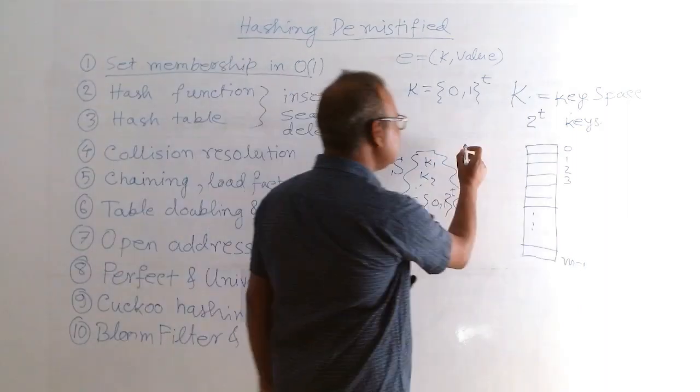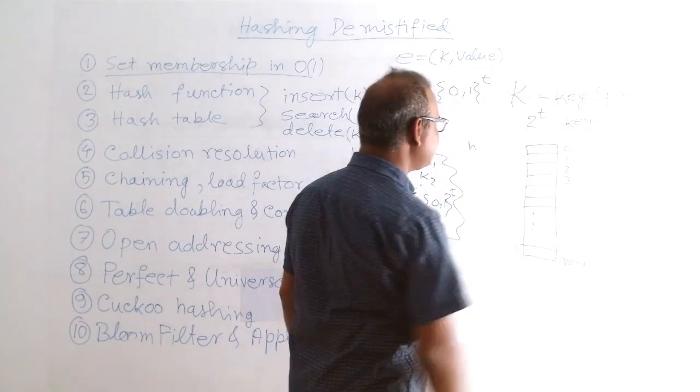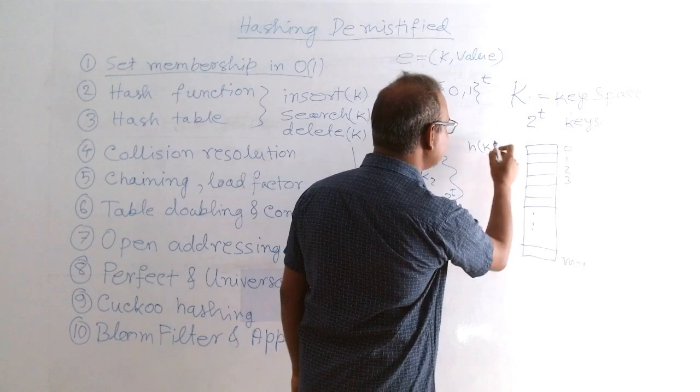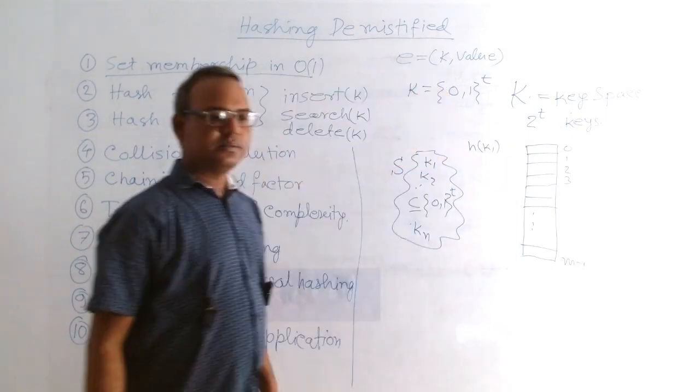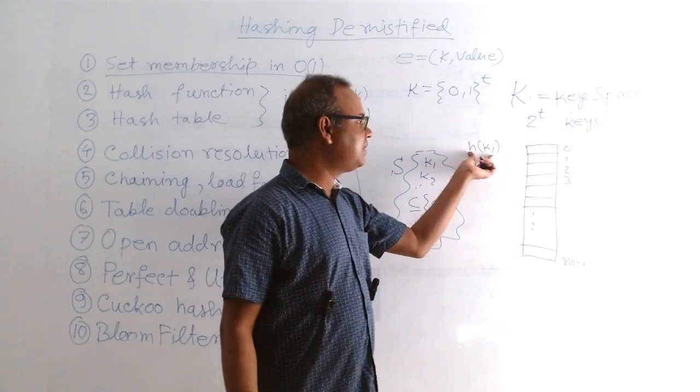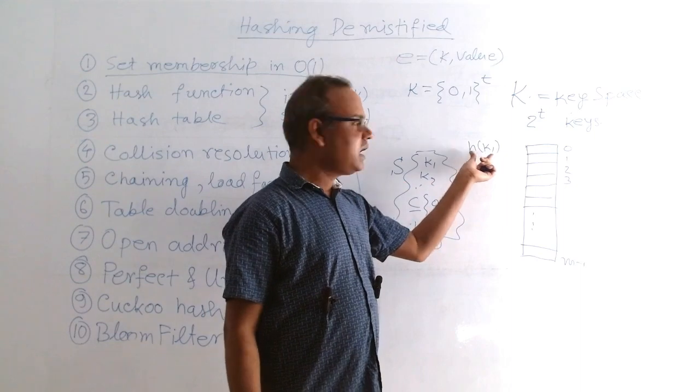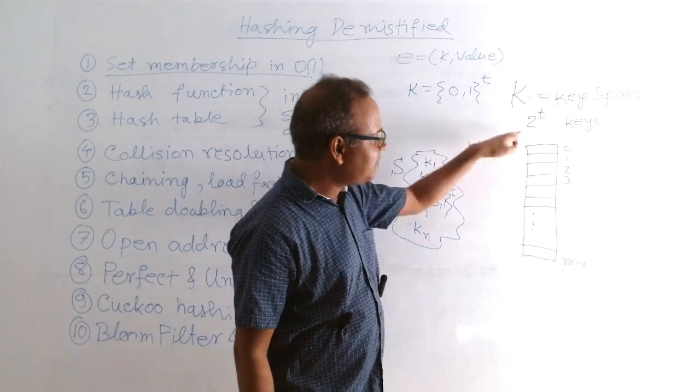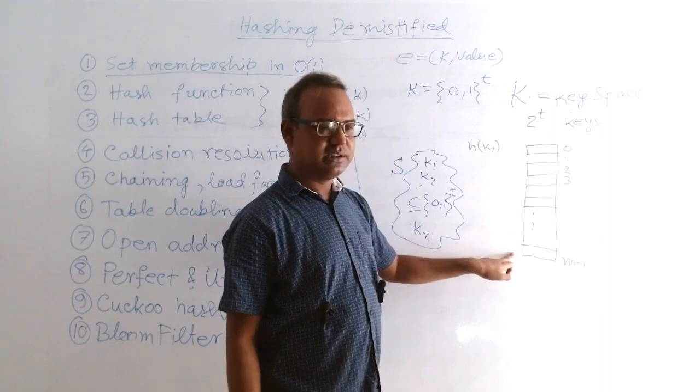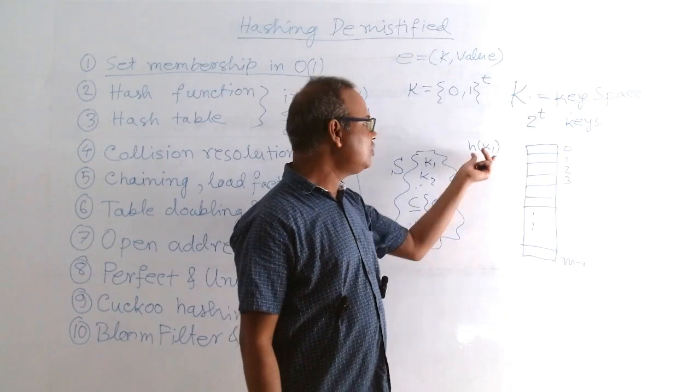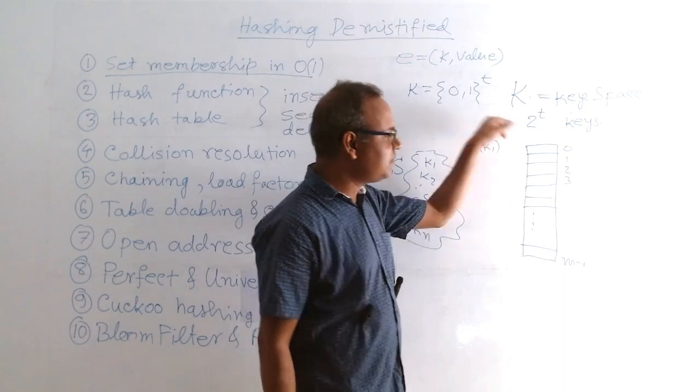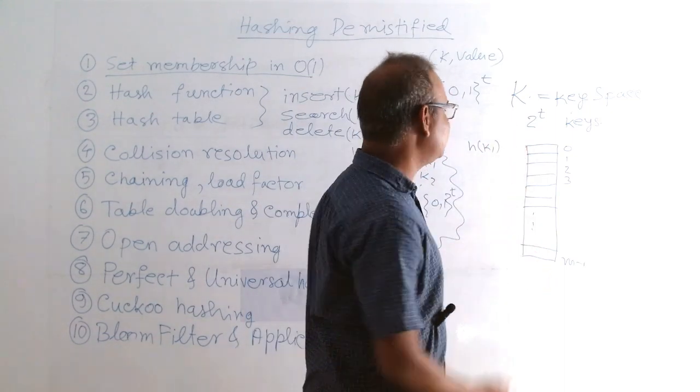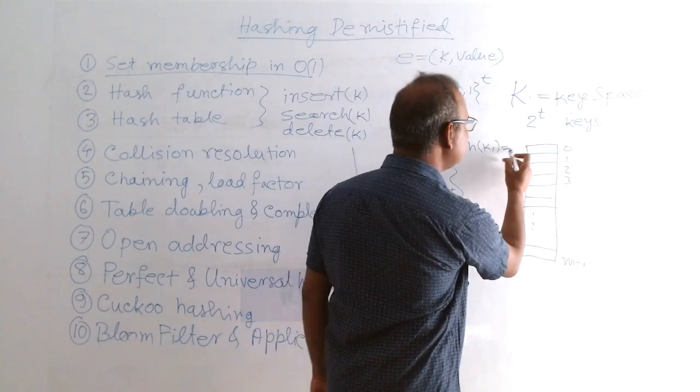So how do we insert? Let's assume that h is the hash function. So for k1, we will compute this value, h of k1. As I told, the range of this function might be between 0 to m minus 1. So this h of k1 is going to map to some point. It may give some index. Let's say this value equals 3.